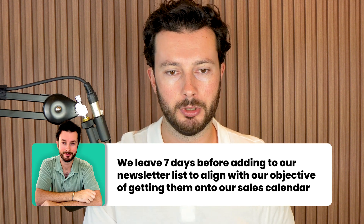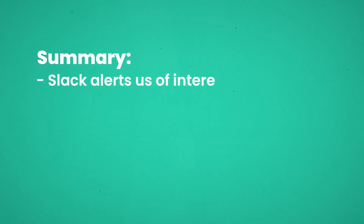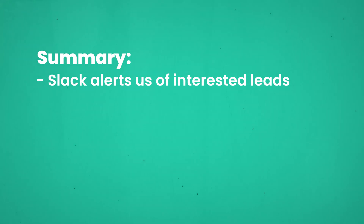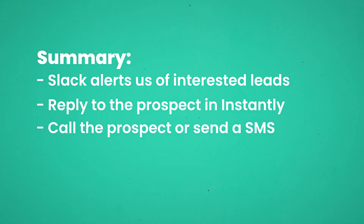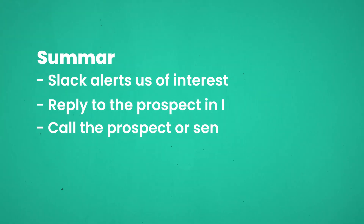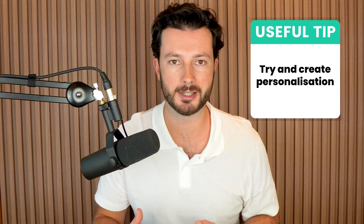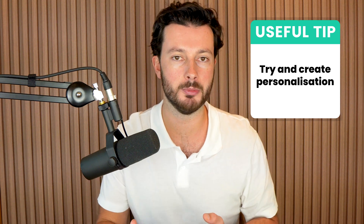Just to go over it once more: when we get a new interested lead inside Instantly, it automatically gets sent to Slack so it alerts us straight away. Then we'll go into Instantly, reply to that prospect trying to get them onto a call, and also pick up the phone and call them. If they don't pick up, we'll drop them an SMS and say something like 'tried to call, I've emailed you — you can reply via email or give me a call back.' Just try and create some personalization, make sure they understand there's a real human being they're going to be speaking to — it's going to increase your show rates even further.